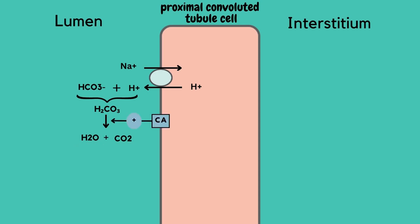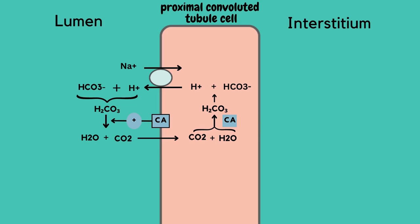Carbon dioxide produced by dehydration of carbonic acid enters the proximal tubule cell by simple diffusion, where it is then rehydrated back to carbonic acid, facilitated by intracellular carbonic anhydrase. After dissociation of carbonic acid, the hydrogen ion is available for transport by the sodium-hydrogen exchanger, and the HCO3⁻ is transported out of the cell by a basolateral membrane transporter.